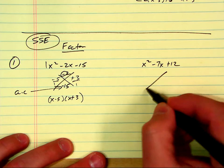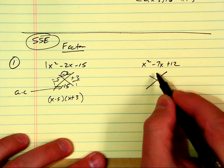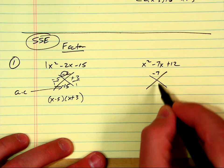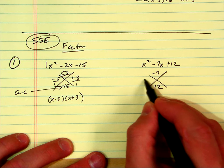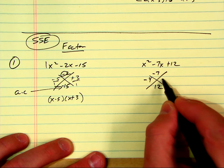Okay, can you guys help me out? What goes here? Everybody say it loud so the mic can hear you. What goes here? What goes here? Negative 4 and negative 3.